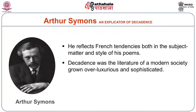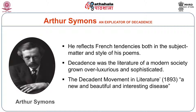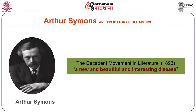Arthur Symons believed that literature of modern society had grown overluxurious and quite sophisticated. He wrote an essay called The Decadent Movement in Literature, published in 1893. He described the decadence movement in literature as, and I quote, 'a new and beautiful and interesting disease.' The very fascinating thing here is to ask: how does a disease become interesting? That itself tells you a lot about the spirit of decadence.